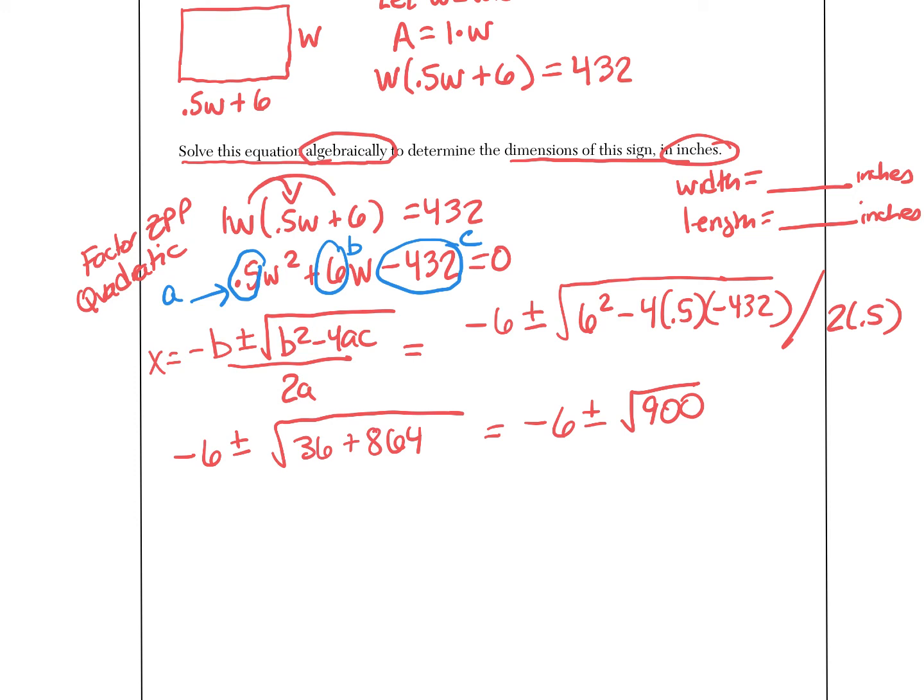So this turns into negative 6 plus 30 or negative 6 minus 30. Negative 6 plus 30 would give you 24, that's your value of x. Negative 6 minus 30—you're talking about a rectangle so you have to rule that out. Please show that this is a real problem with numbers. Dimensions, you need to disregard that.